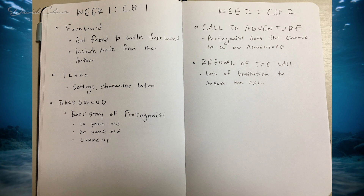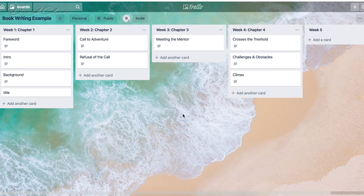The pen and paper method breaks things down into different weeks. Within each week I get a bit more detailed — for Chapter One I've broken it down into the foreword, intro, and background. Week two covers the call to adventure and refusal of the call. We then take this weekly structure and break it into daily structures.